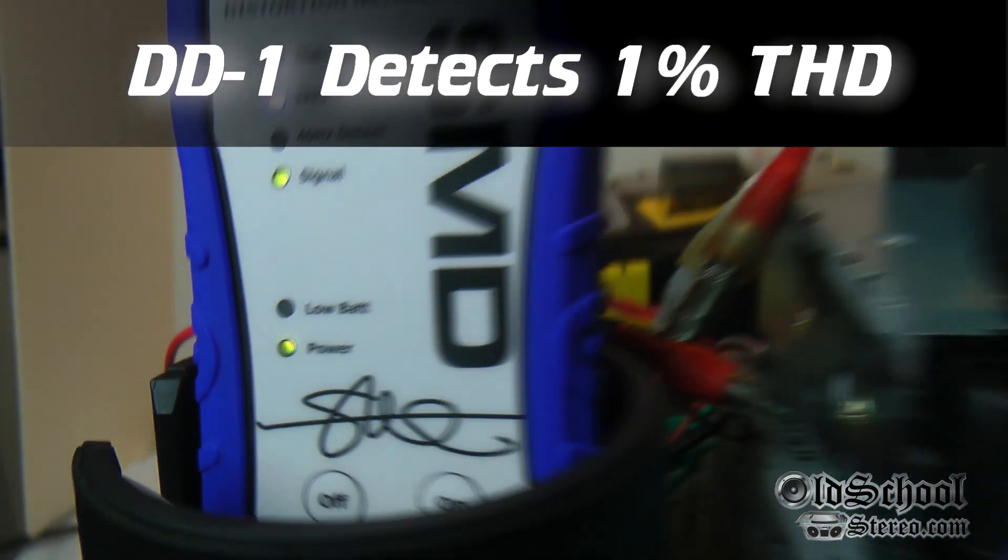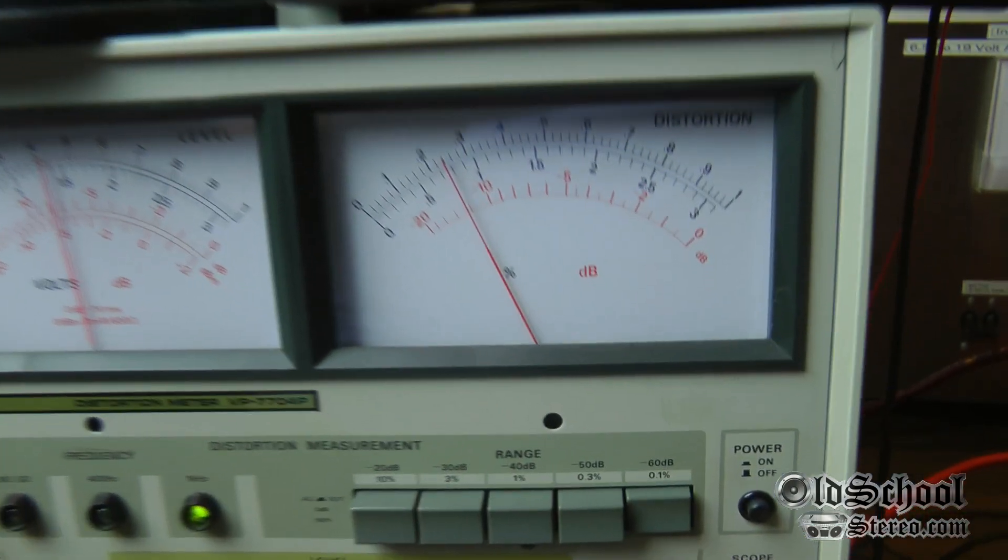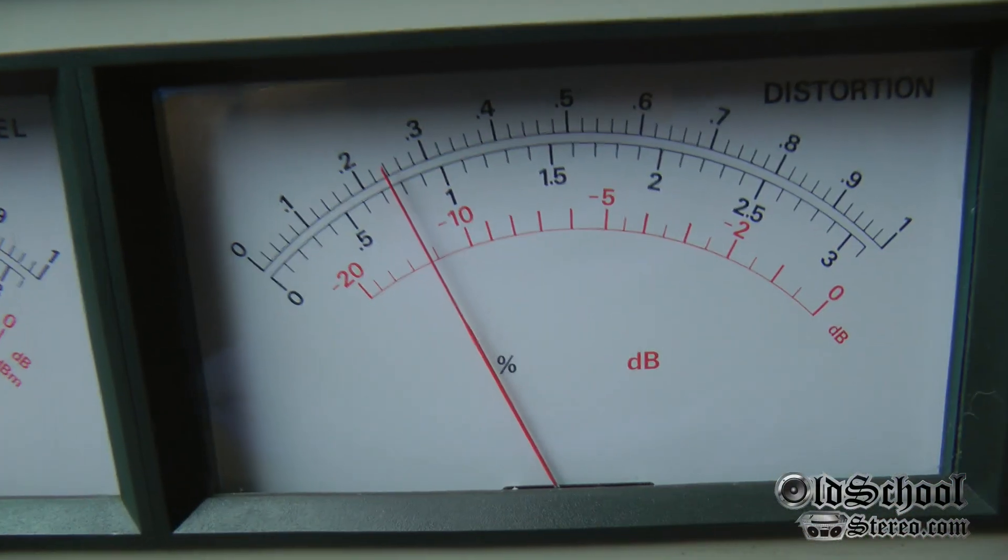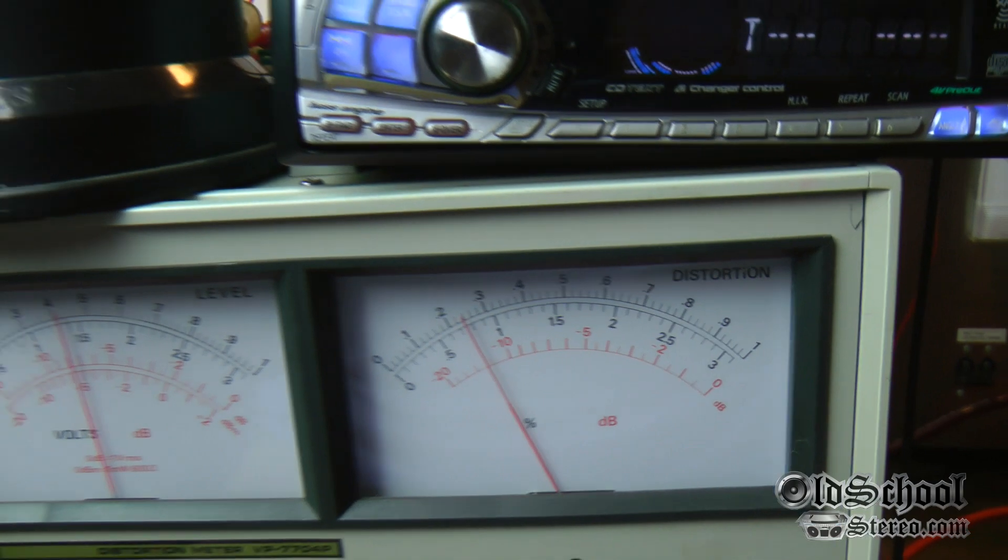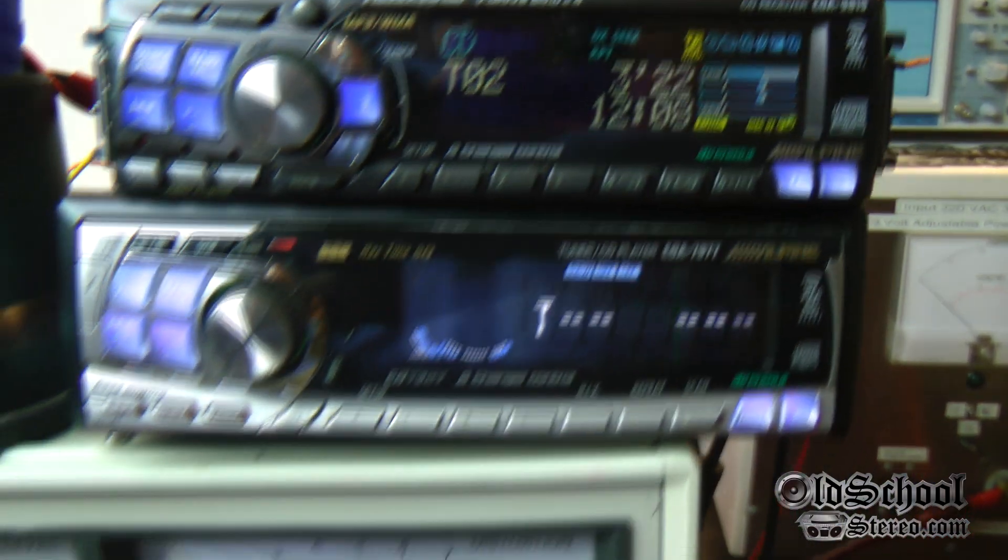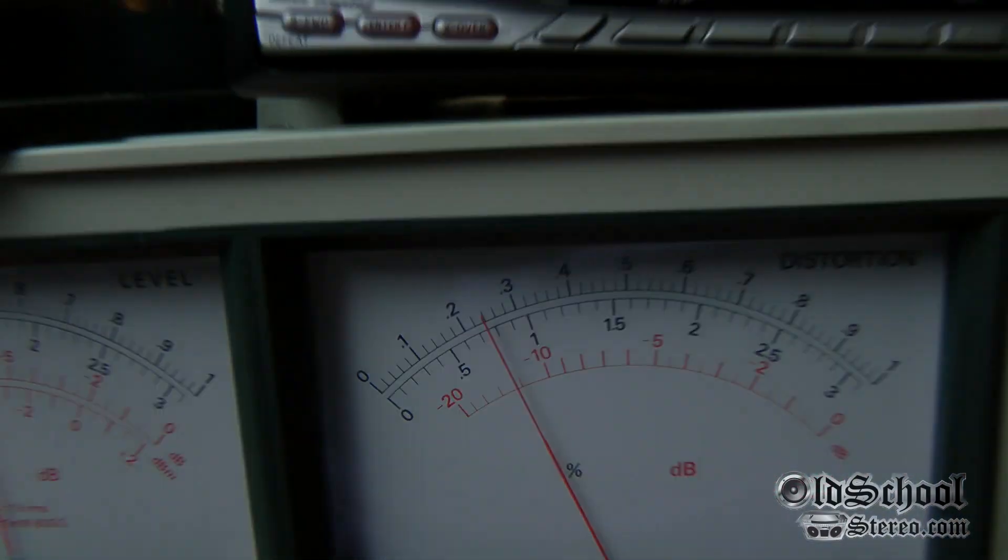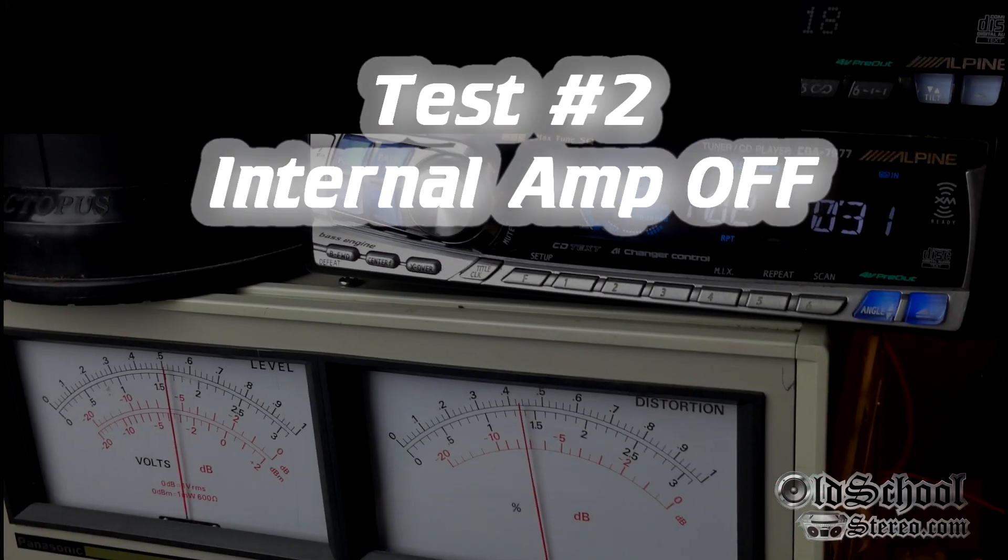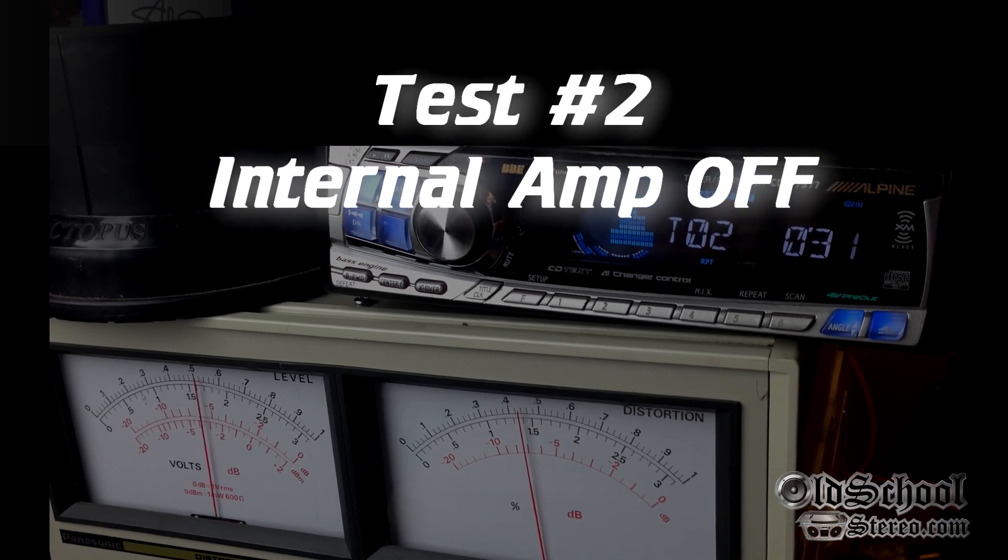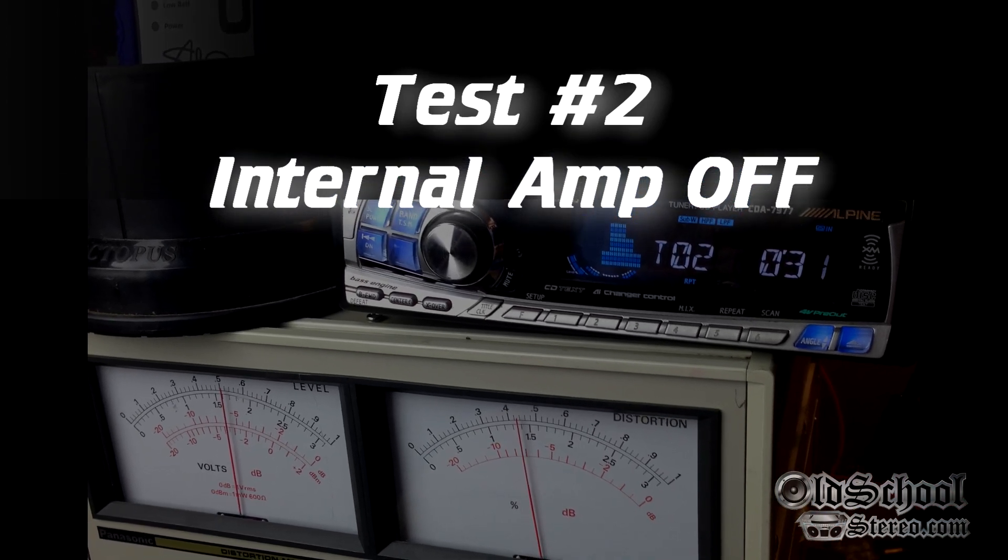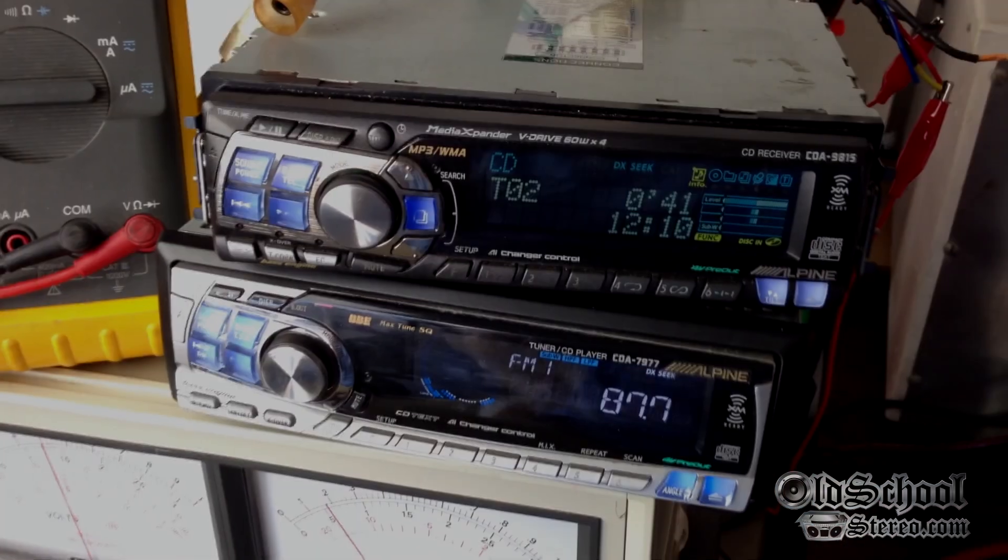The DD1 gives us the one kilohertz detect. Of course it's not going to show distortion because we're so low. This is an exceptionally clean head unit. Doesn't have quite the voltage of the 7977 but the THD is lower, so that's very cool.